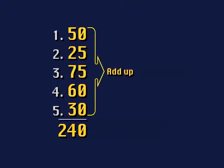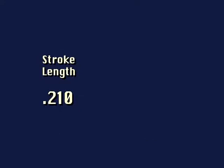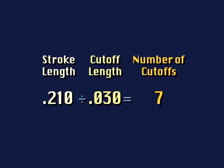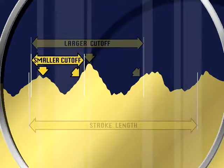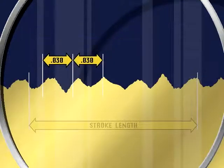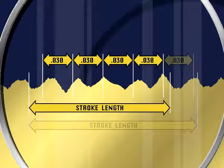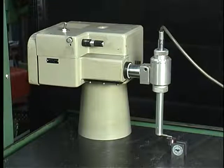An average is calculated by adding up a group of numbers and dividing by the number of values in the group. The size of the cutoff determines how many segments the stroke length will be divided into. For example, if the stroke length is 210 thousandths and the cutoff is 30 thousandths, there will be seven cutoffs. The roughness within each cutoff is assigned a value, and these values are then averaged to produce the RA value. A larger cutoff will include more irregularities such as waviness, while a smaller cutoff may omit waviness. At least five cutoffs are required within a stroke to determine roughness average. A larger stroke can be used if there is a large enough surface area, providing more cutoffs.